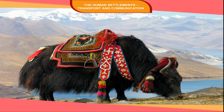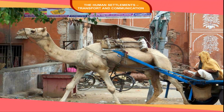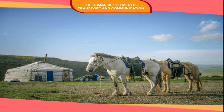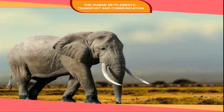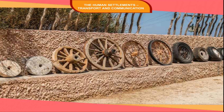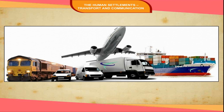For example, yaks are used to transport goods and people in the Tibetan highlands. Camels are used in deserts and horses in European steppes. Elephants are pressed into service in tropical dense forest areas. After the invention of the wheel, means of transport grew rapidly.